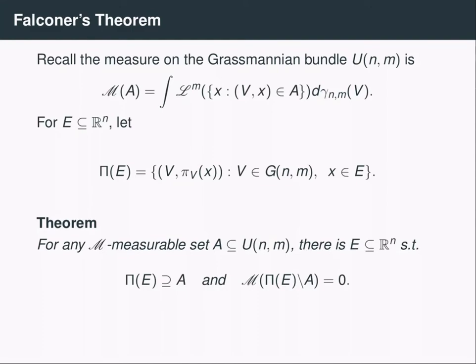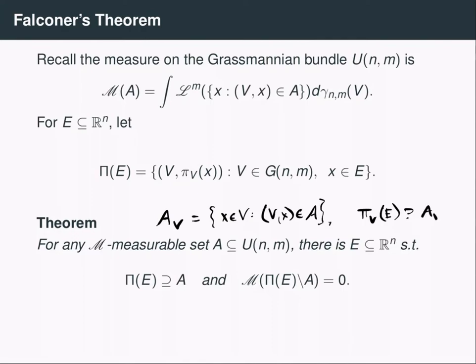What does this have to do with sundials and shadows? If I define a set A by specifying its slices on planes — letting A_V be the set of X's in V such that the pair (V, X) is inside my set A — then if I'm able to specify all those sets A_V so that the resulting set A is measurable with respect to the measure M, the theorem says that outside of a Grassmannian measure-zero set of planes, I can find a set E so that the projection of E into V contains my chosen slice, and the difference between the projection of E and this set has Lebesgue measure zero.